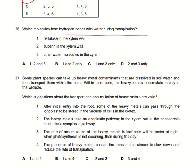Which molecules form hydrogen bonds with water during transportation? Cellulose in the xylem wall — yes, cellulose forms hydrogen bonds with water so that water molecules can be retained. Suberin is not involved in hydrogen bonding. Other water molecules — yes, they do form hydrogen bonds. So options 1 and 3 are correct. Option C is the right answer.